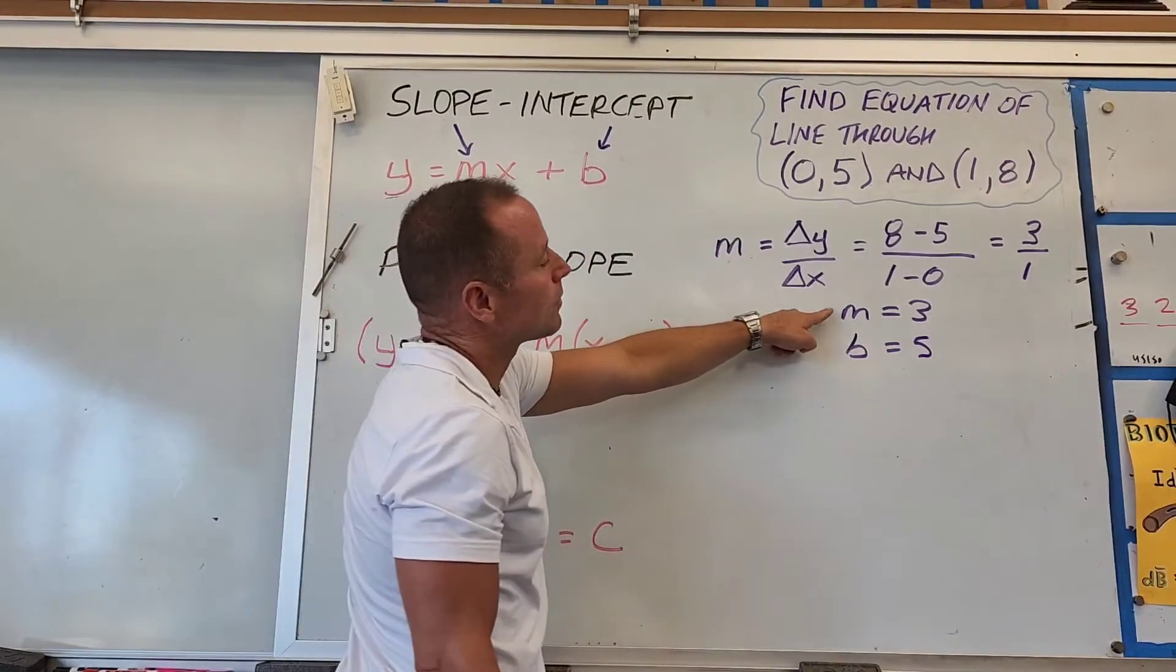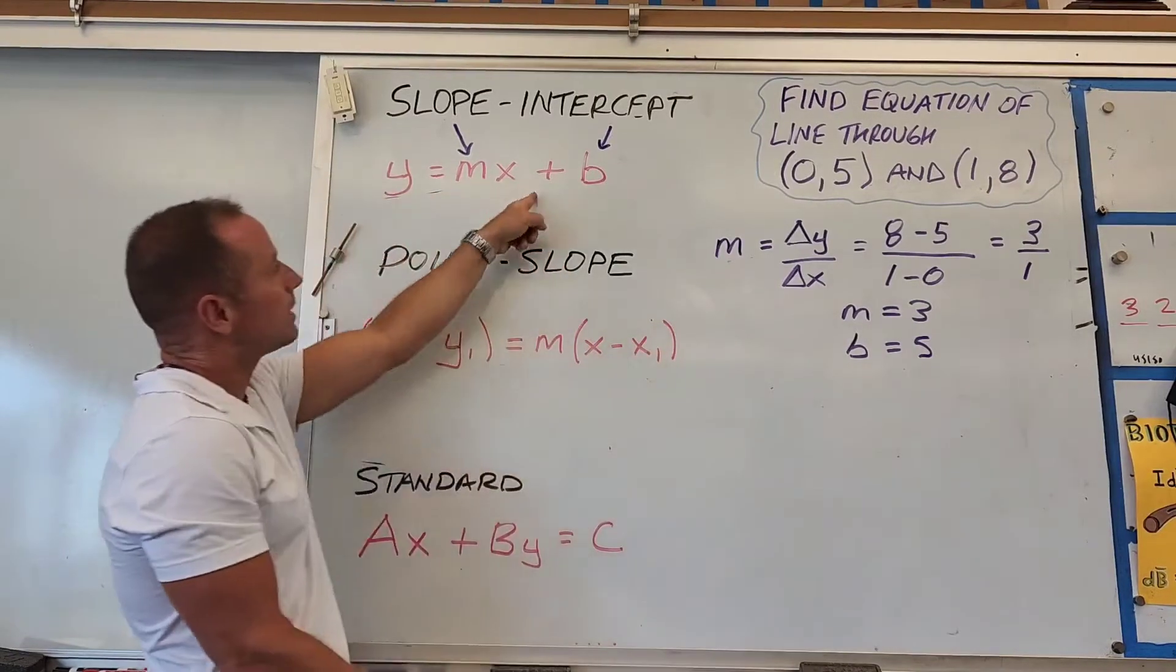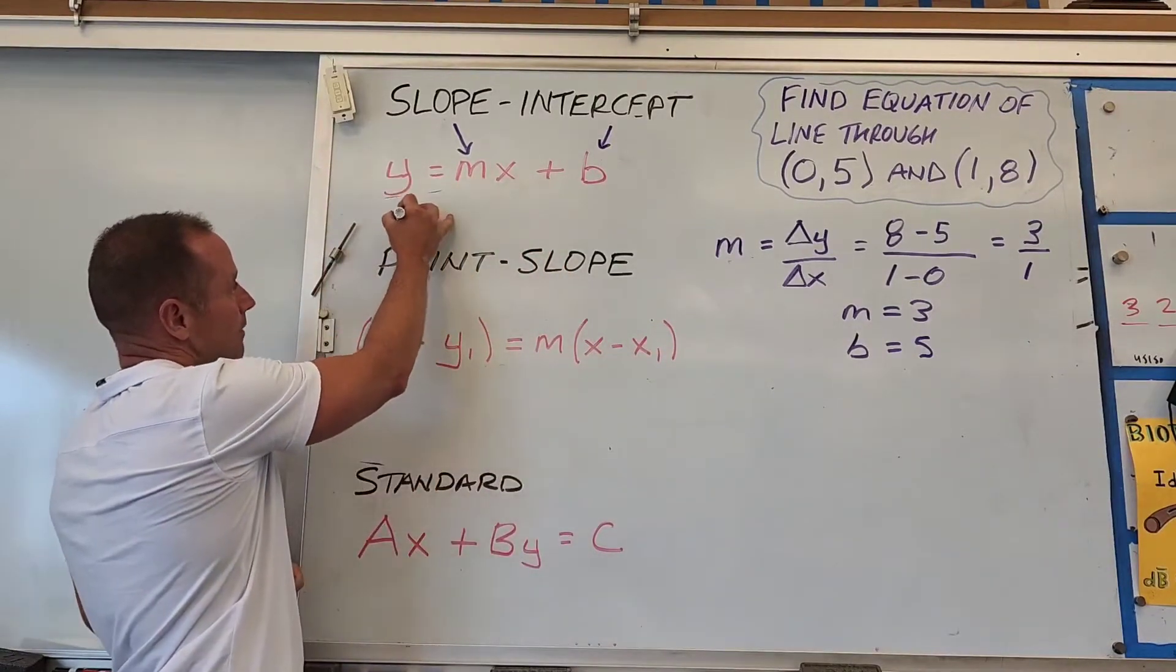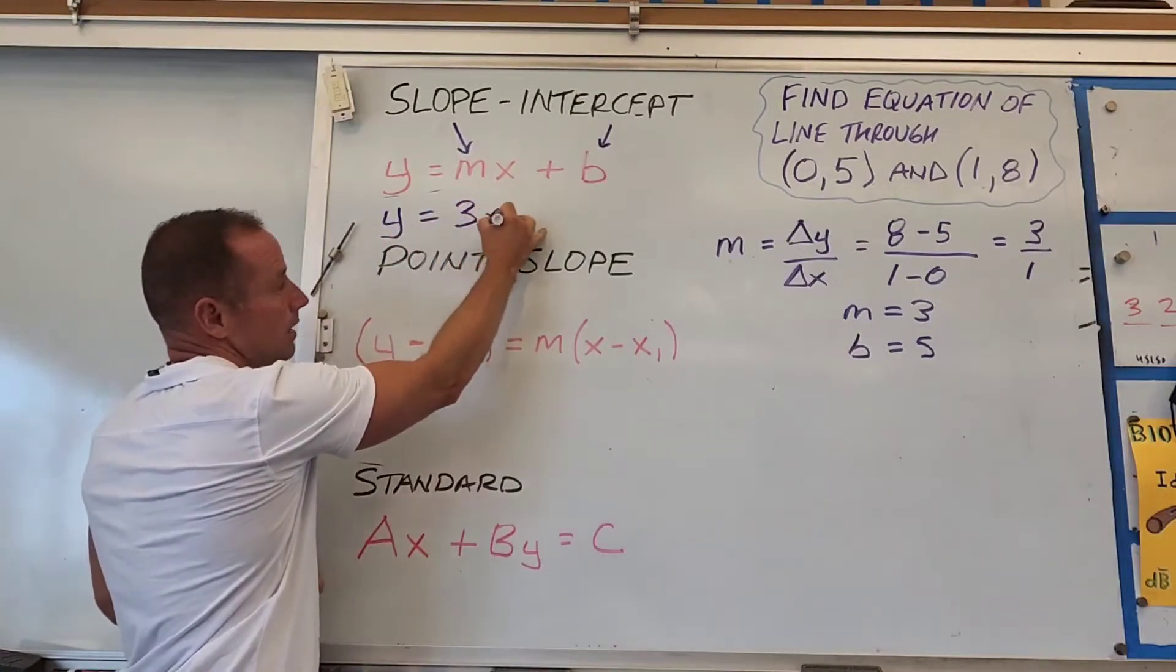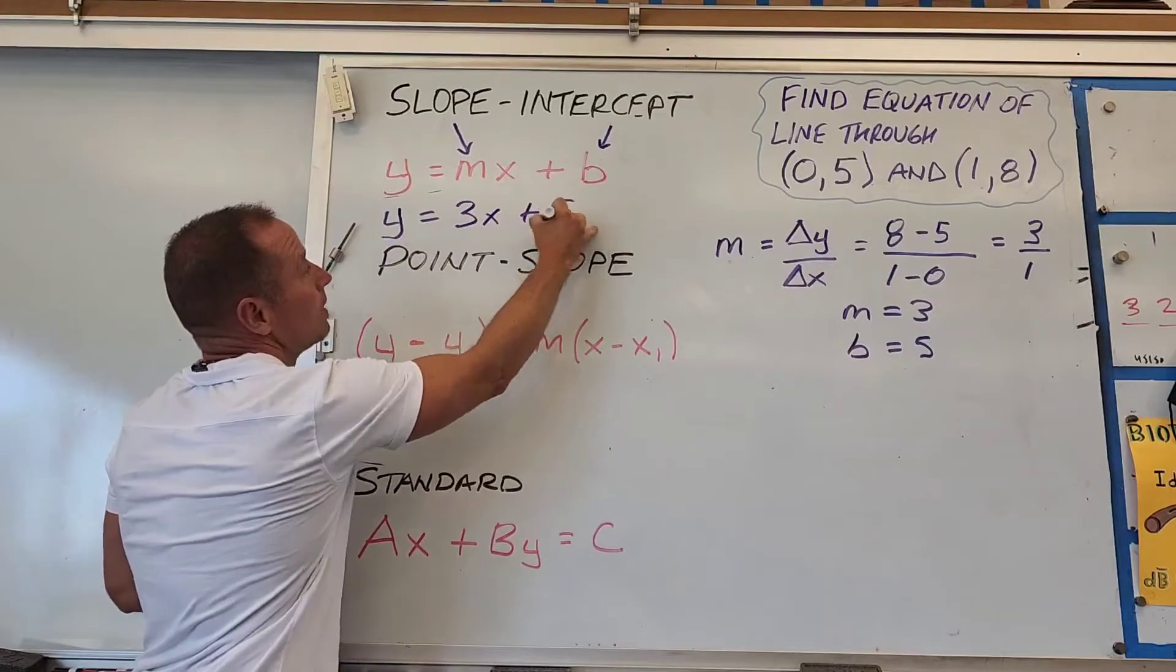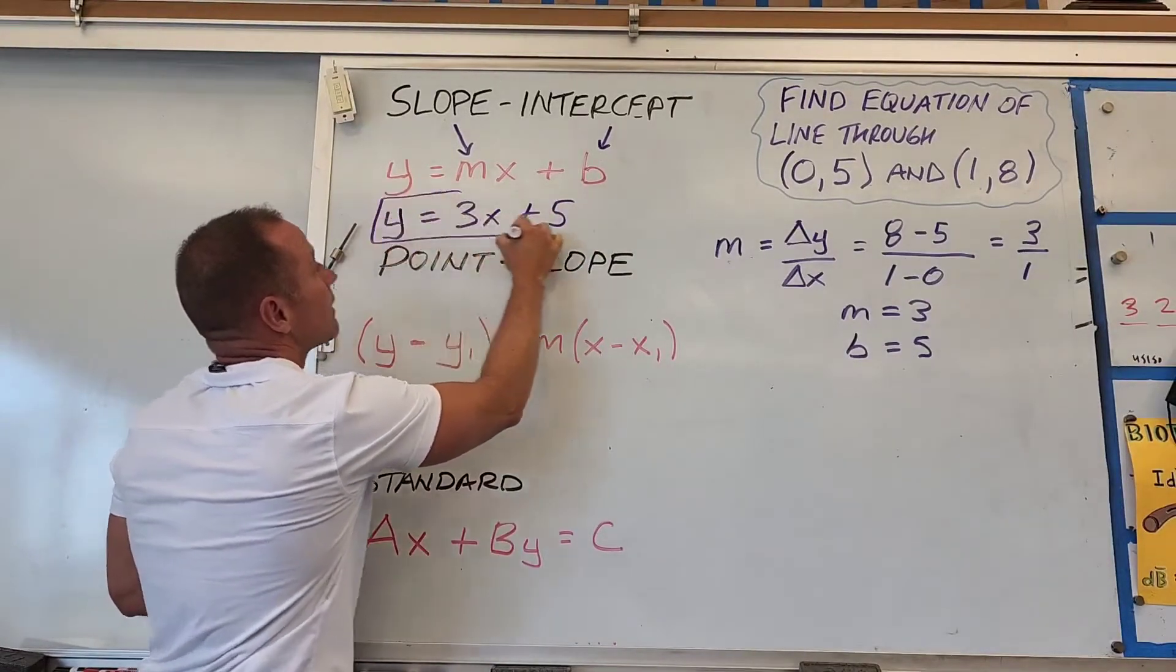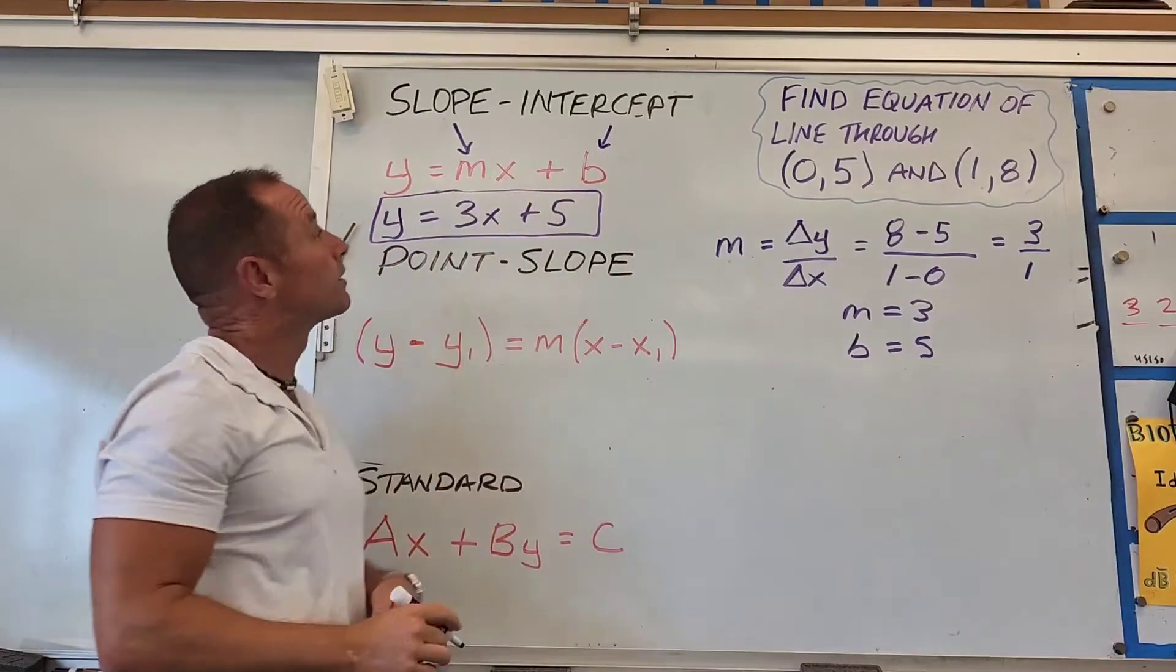Now that we have the slope m and the y-intercept b, we can plug them into this form. Our equation is y equals 3x plus 5, and that's the equation in slope-intercept form.